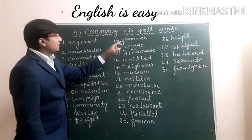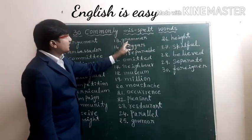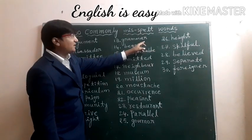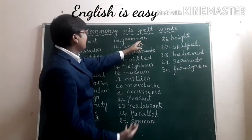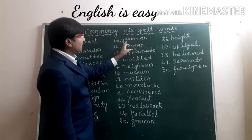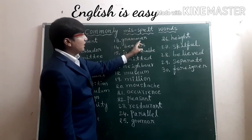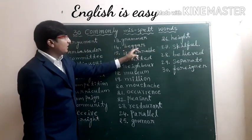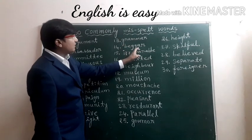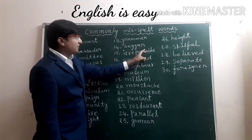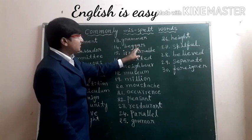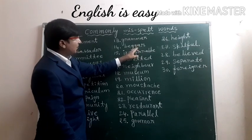Thirteenth one: Grammar. When we write this word, we write E-R at the end. That is a common mistake. But remember, the correct spelling is G-R-A-M-M-A-R. Fourteenth one: Beggar. Even when we write beggar, it's not E-R at the end — it is A-R. Children generally write E in place of A.